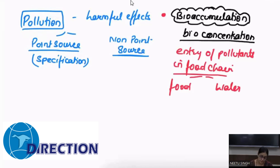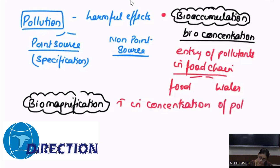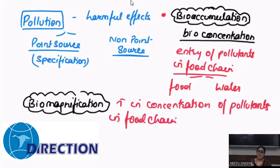The second term is called biomagnification. Biomagnification is basically defined as the increase in concentration of pollutants in the food chain as we take the transfer of pollutants from trophic level one to two to three to four — the concentration keeps increasing. So magnification and accumulation should not be treated as synonymous expressions.